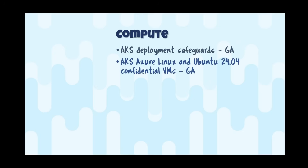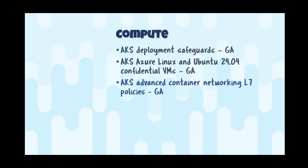AKS Azure Linux and Ubuntu 24.04 now support confidential VMs — AMD whole-VM encryption that protects data while it's in use. So beyond encryption in transit and encryption at rest, this adds encryption in use. AKS advanced container networking Layer 7 policies are also now GA, part of the advanced container network services for Cilium clusters, giving fine-grained inspection and control over application traffic.